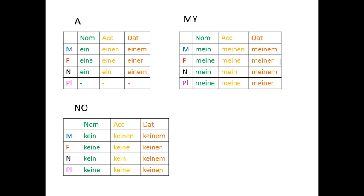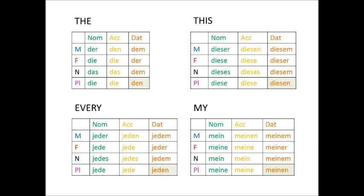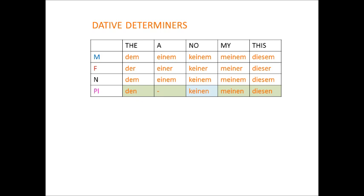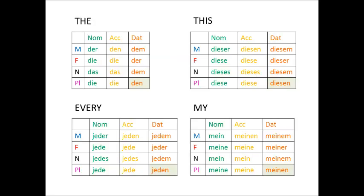The dative plural determiners are a bit of an exception. All the way along until now, all of our plural determiners have been the same as the feminine determiners, but that's not the case in the dative. Here, although our feminine ends in er, our dative plurals all end in en — so you get den, keinen, meinen, etc. If you're thinking those dative plurals sound familiar, it's because they are — they're precisely the same as masculine accusative singular determiners, which also all end in en.